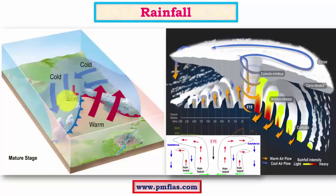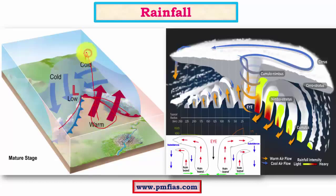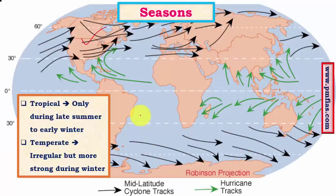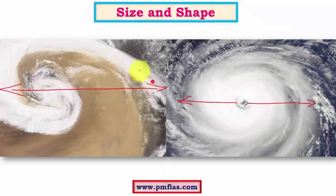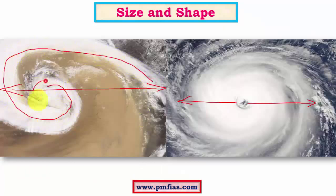Regarding rainfall, temperate cyclones form due to occluded front formation. The occluded front involves a cold front and a warm front, with warm air being uplifted — a process called occlusion. Rainfall occurs in both the warm front and cold front regions, and looking at the diagram, we see intense cloud formation and rainfall throughout the low pressure system.